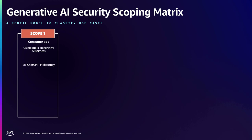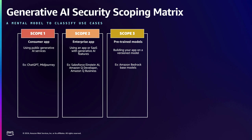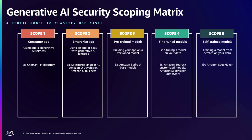You'll have seen this before — our Amazon CISO Steve Schmidt walked through this in the keynote. From scope one through scope five, left to right, represents the least amount of interaction with your data as a customer to the most, where you're actually creating the model yourself. The scoping matrix gives a common language. In the first few months working with customers and partners, we noticed a lack of specificity — people were just asking 'how do you secure AI,' which is a big question. The matrix helps you zero in on what type of application you're specifically talking about.